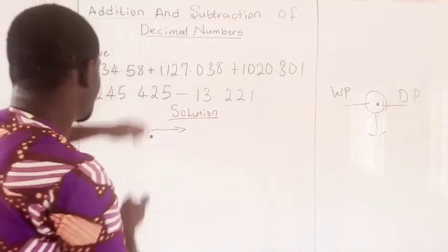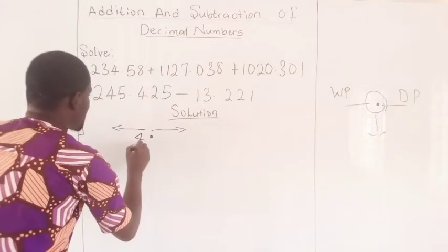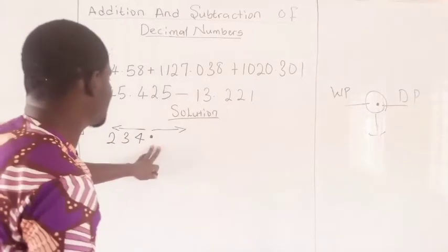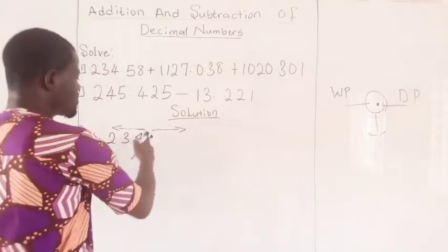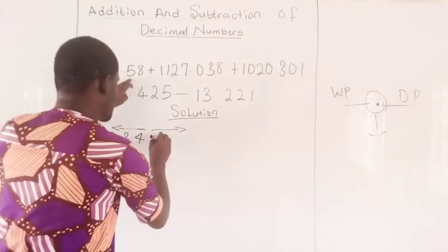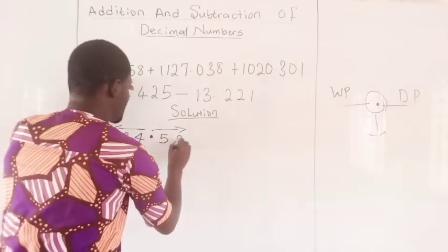For example, this one here. I have four, three, and two. Then, after the decimal point, you arrange from left to right in the direction of the arrow. You have five and eight.